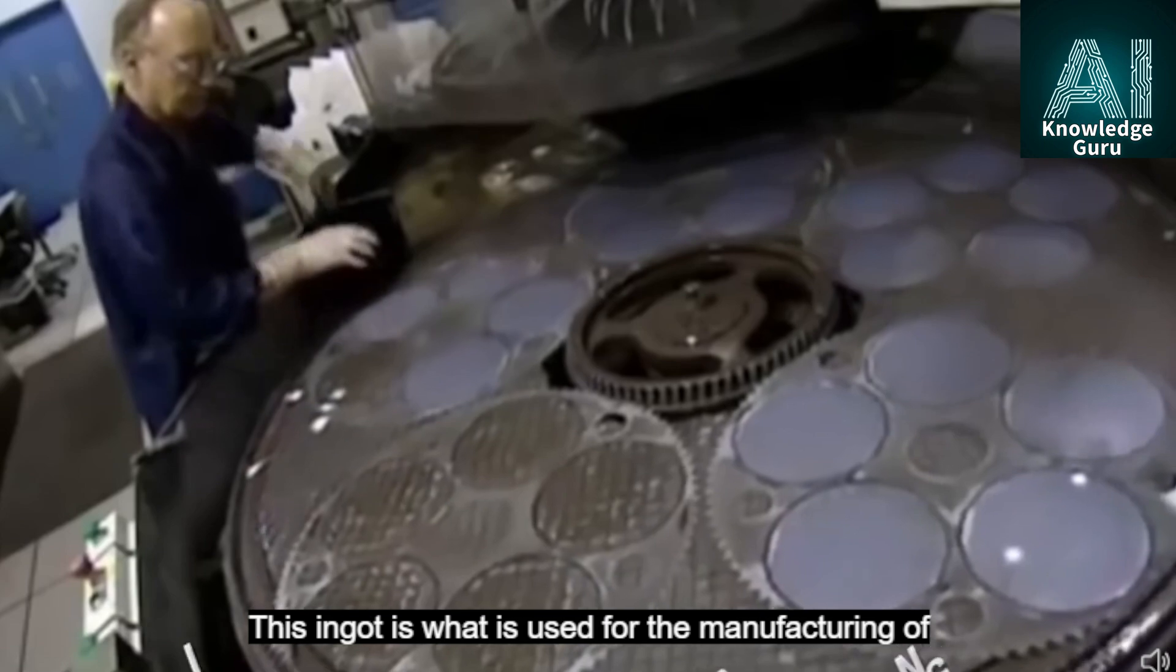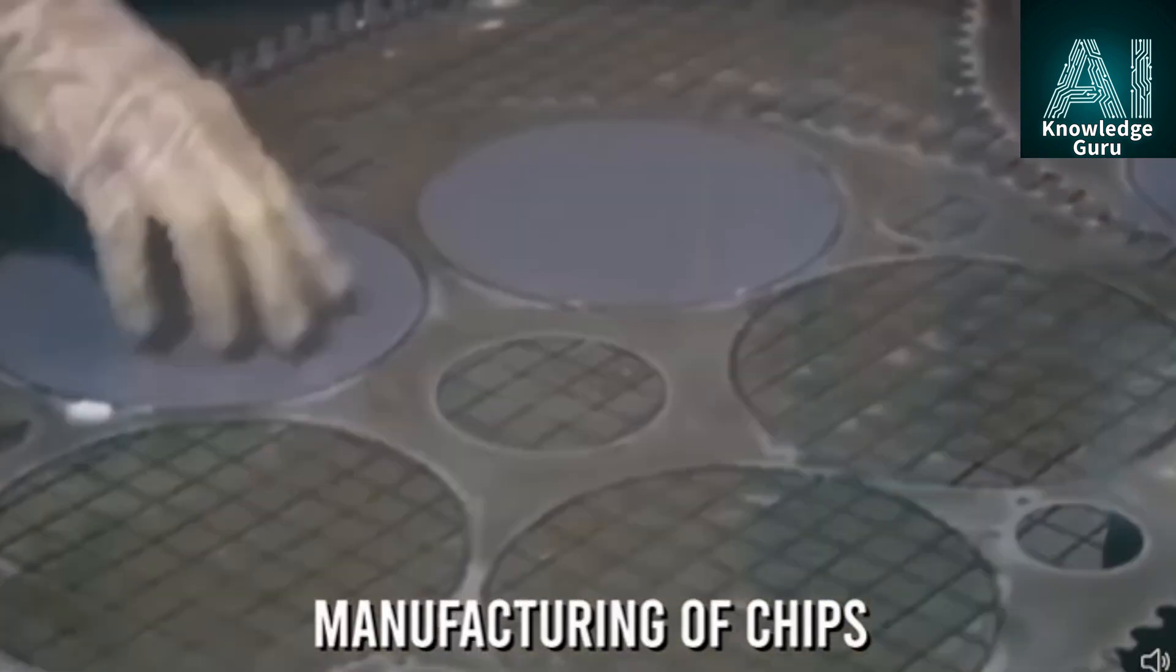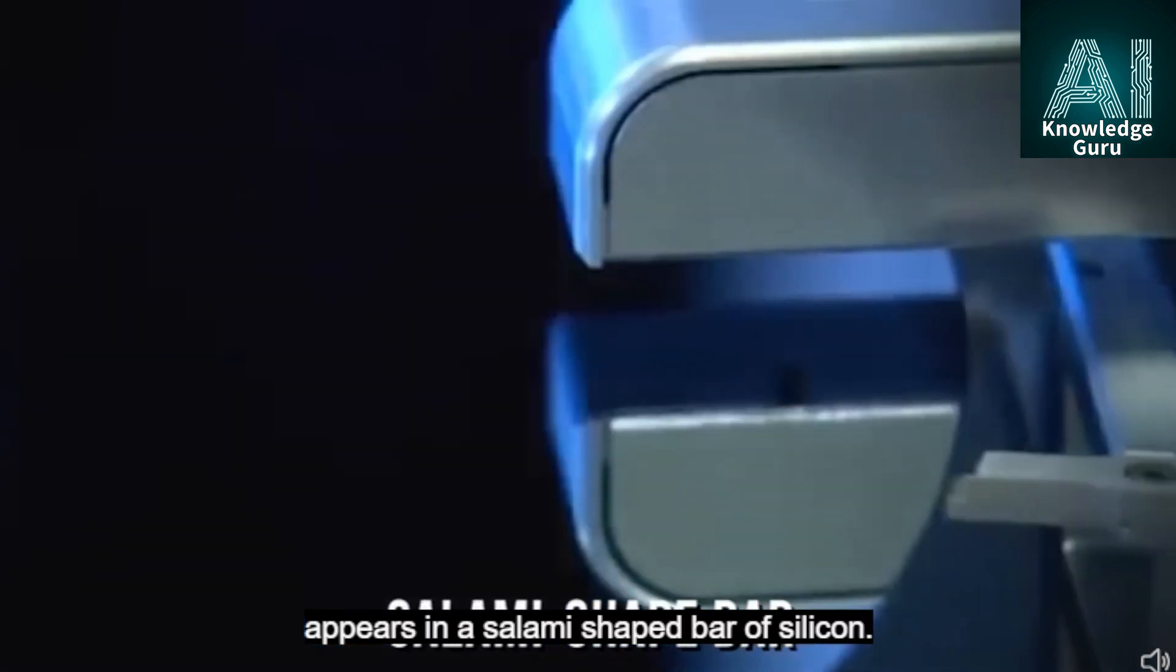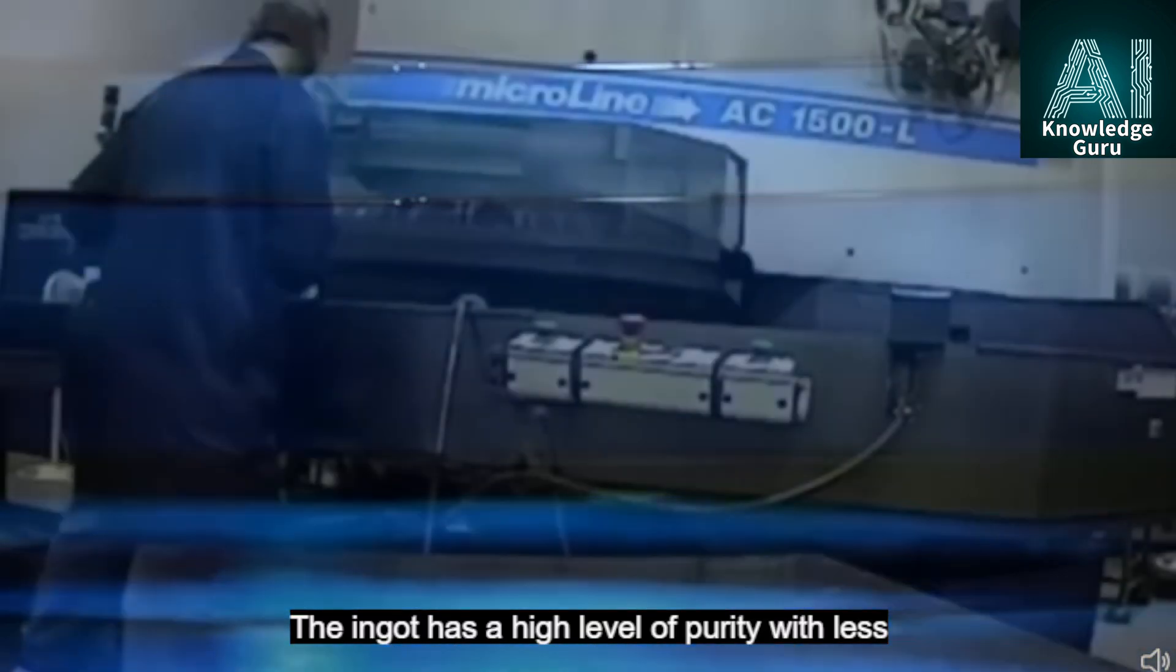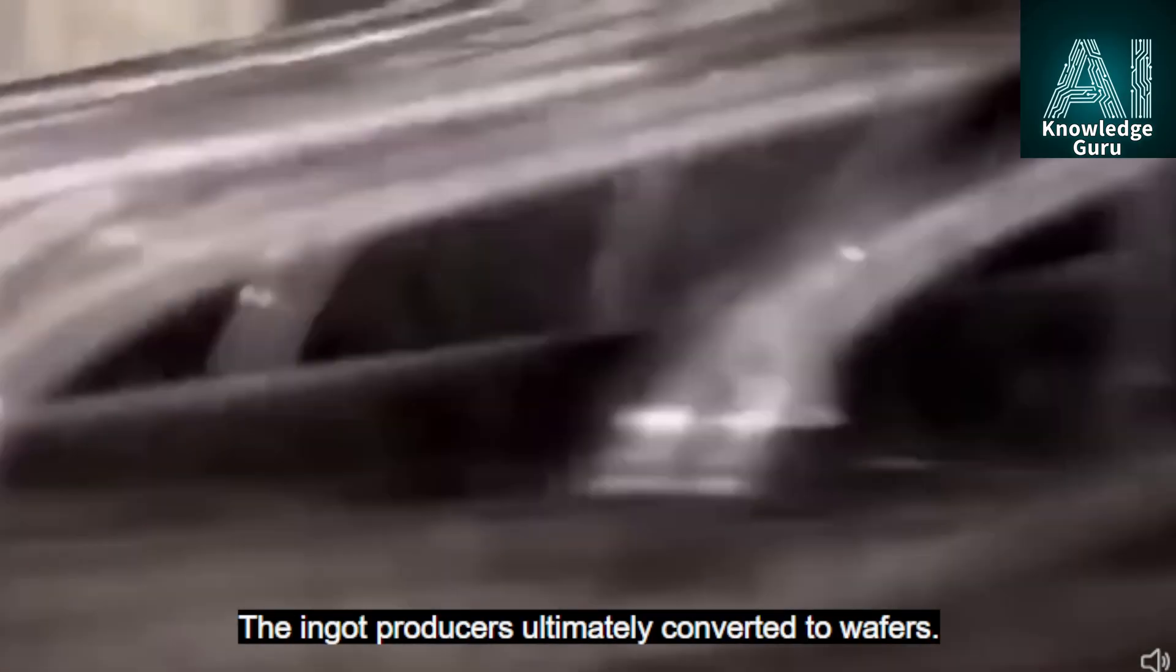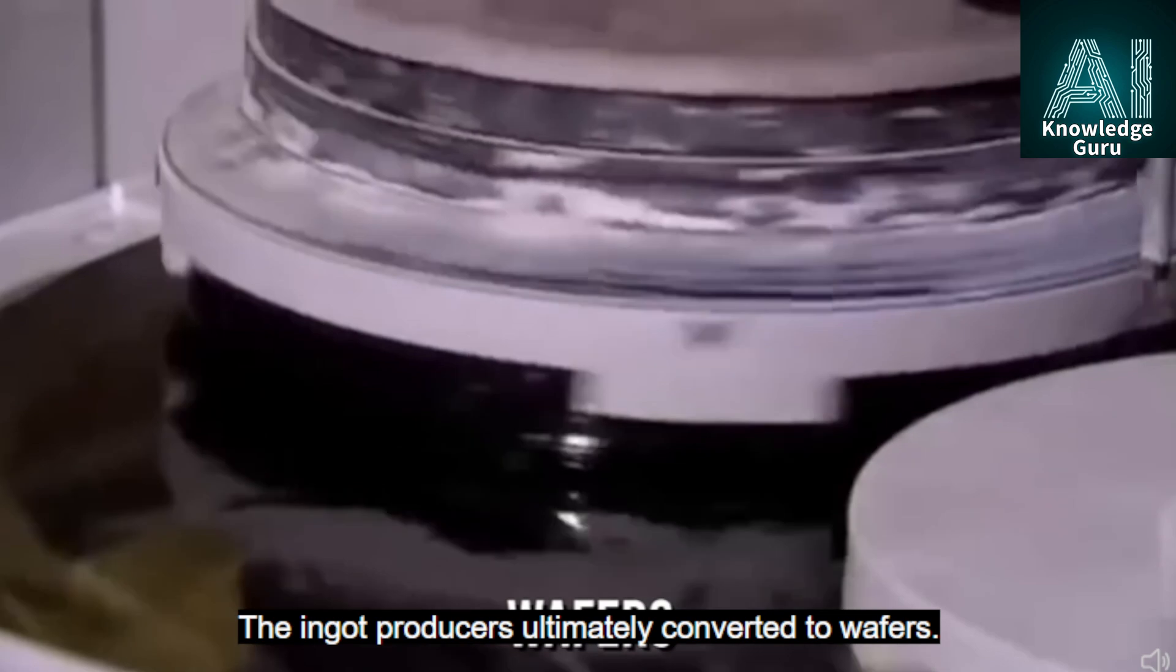This ingot is what is used for the manufacturing of chips. Also known as boule, the ingot is monocrystalline silicon that appears in a salami-shaped bar of silicon. The ingot has a high level of purity with less than 0.1% of impurities.